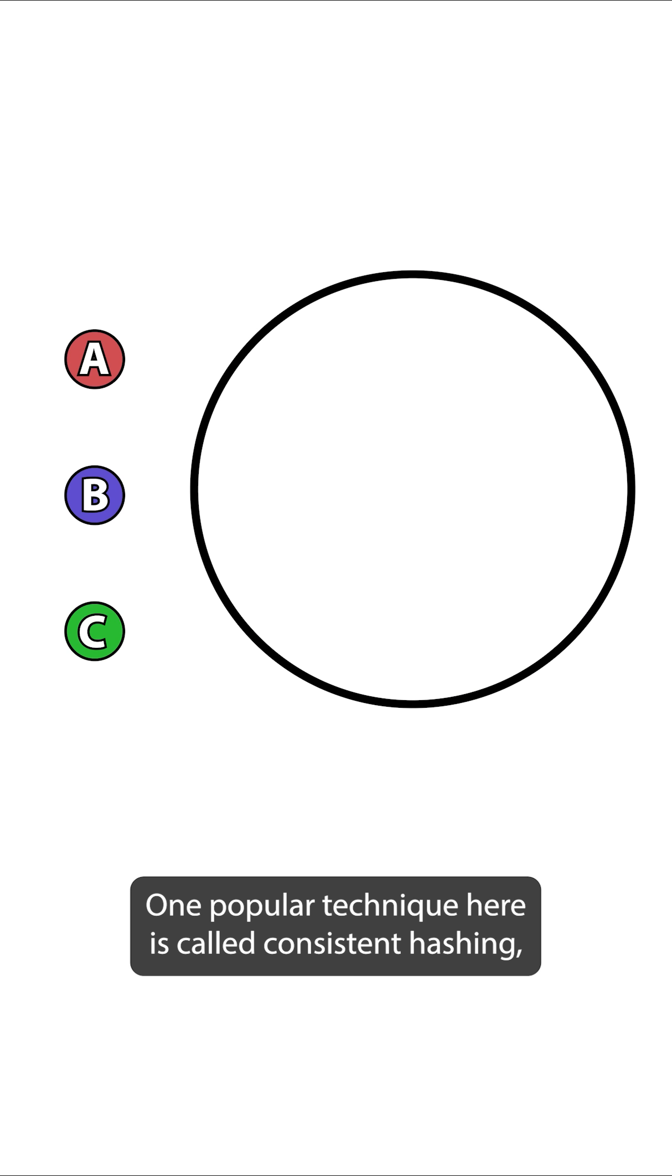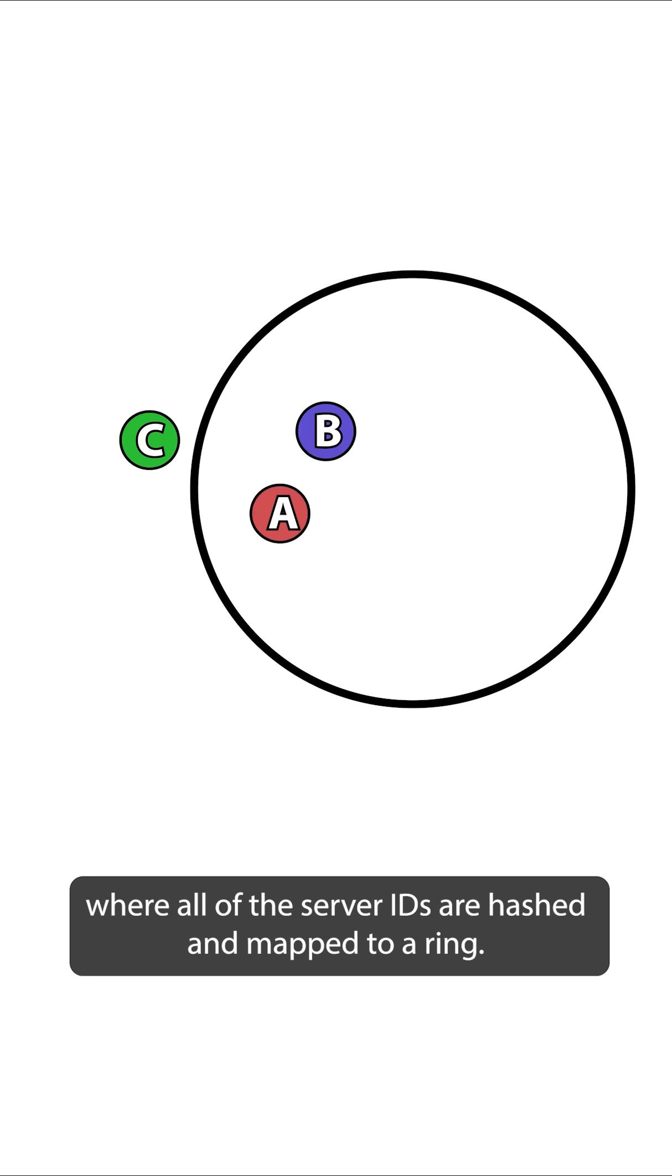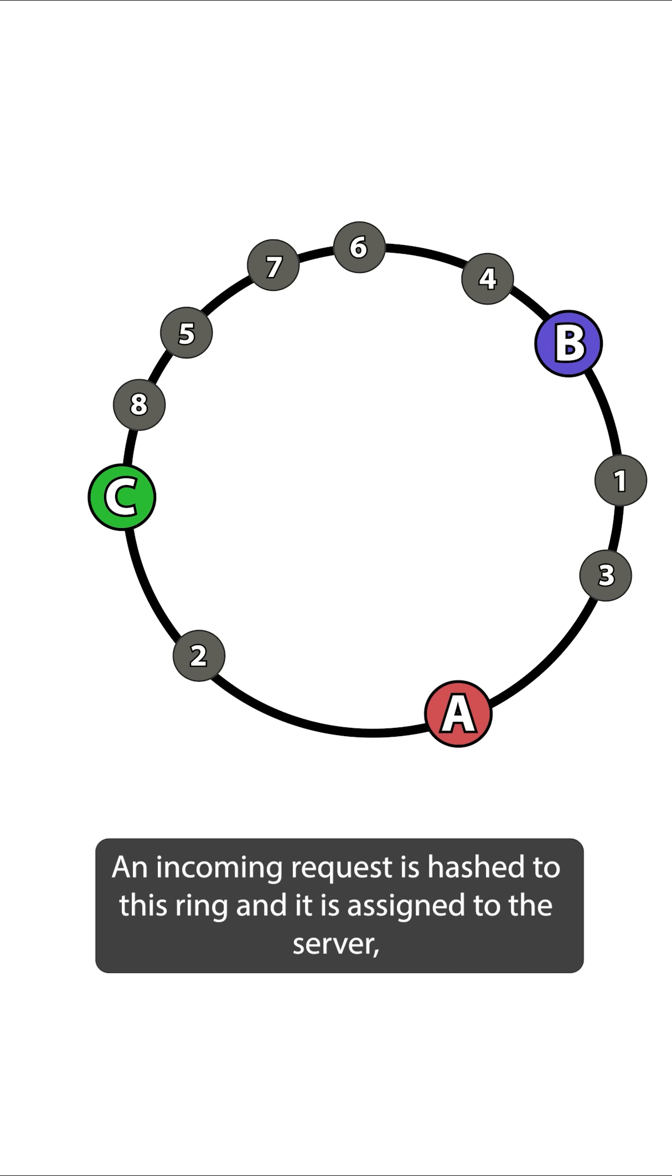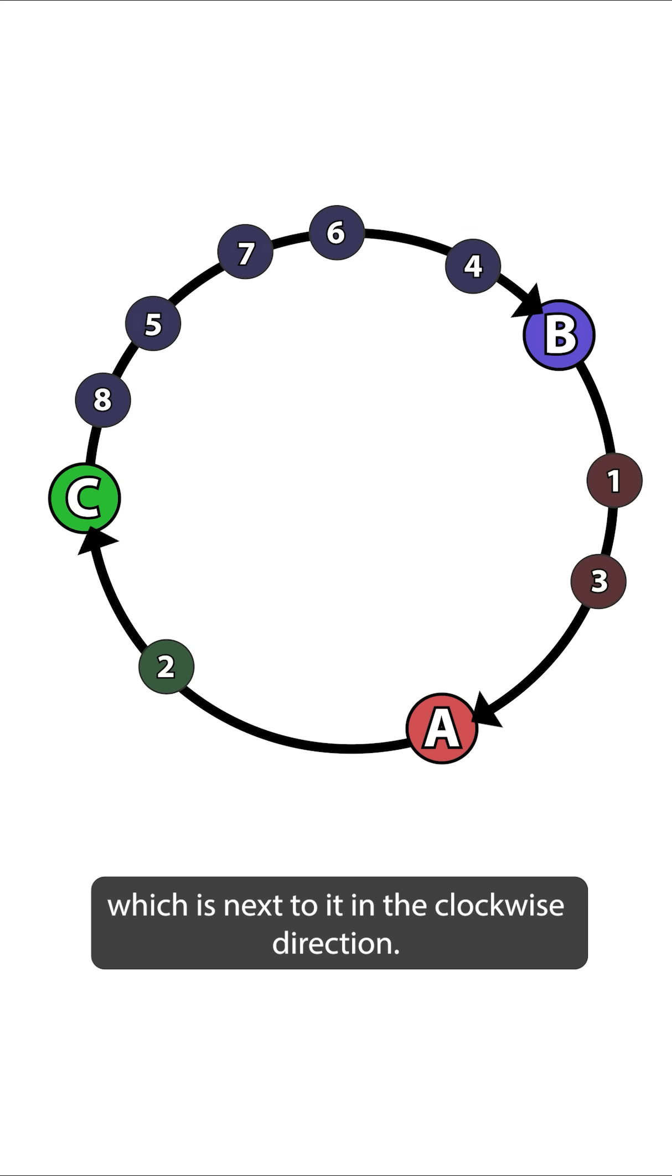One popular technique here is called consistent hashing, where all of the server IDs are hashed and mapped to a ring. An incoming request is hashed to this ring and it is assigned to the server which is next to it in the clockwise direction.